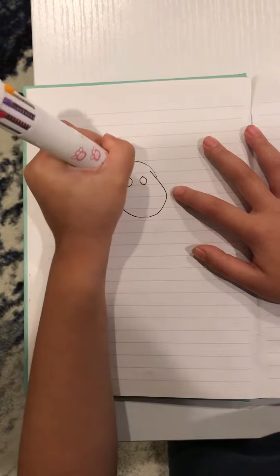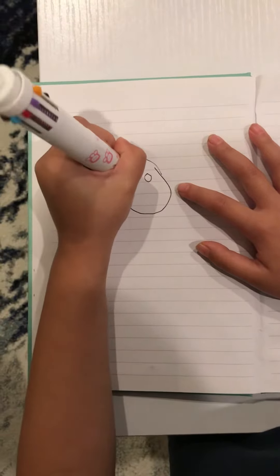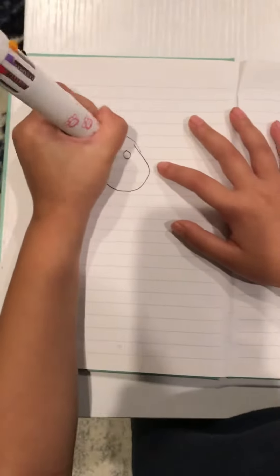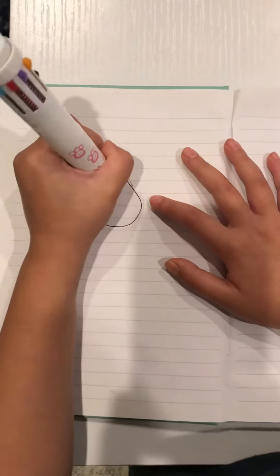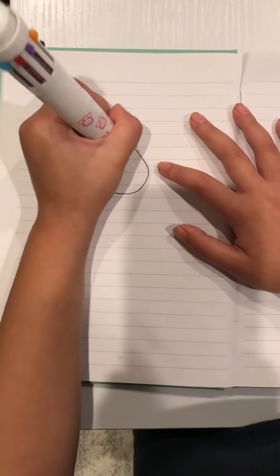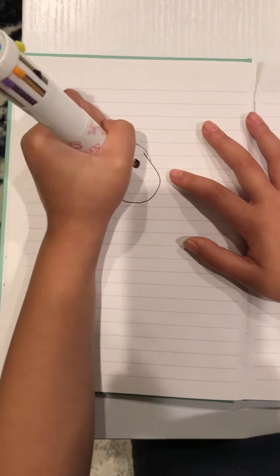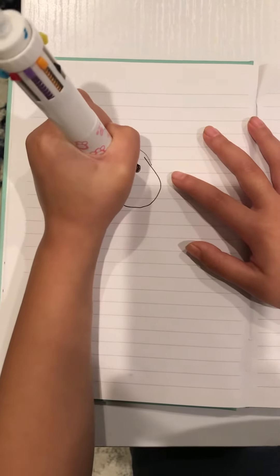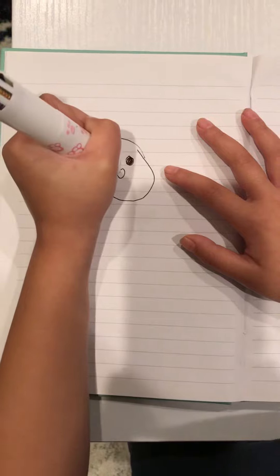Then color it in. Then draw one more circle on the bottom for the nose. Draw two dots.